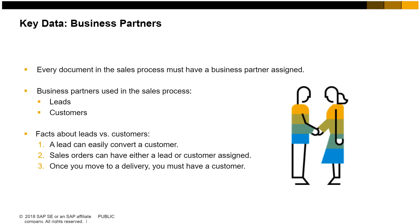Every document in the sales process must have a business partner assigned. The business partners used in the sales process are leads and customers. A lead can easily convert to a customer. A sales order can have either a lead or a customer assigned, but once you move to a delivery, you must have a customer. Customer master data describes people and organizations to whom your company sells products and services, and is used as the foundation for documents related to processing and fulfilling orders, as well as for the dunning customers wizard.